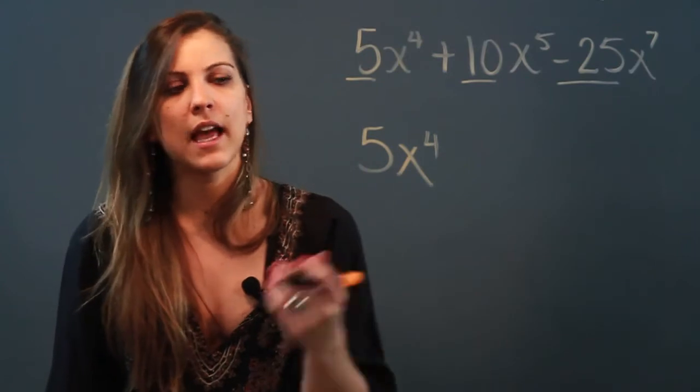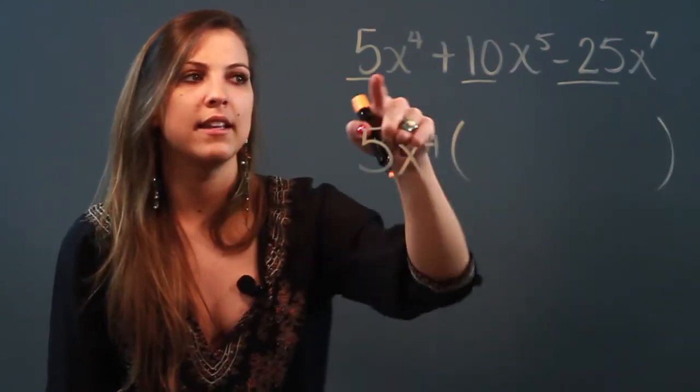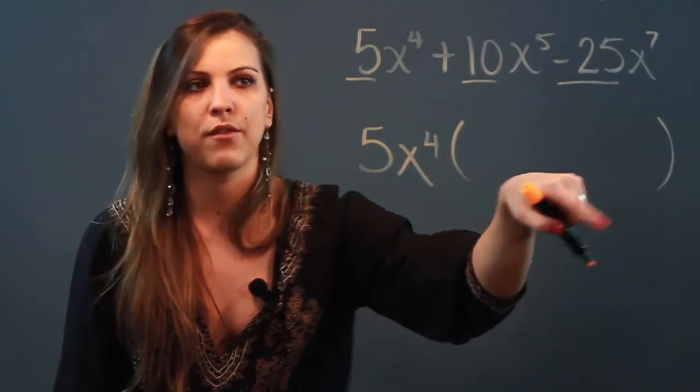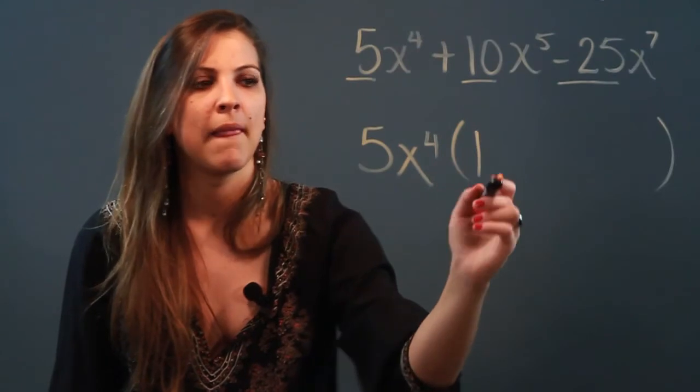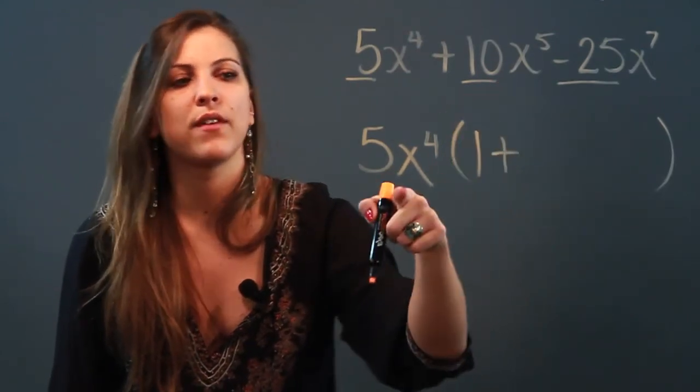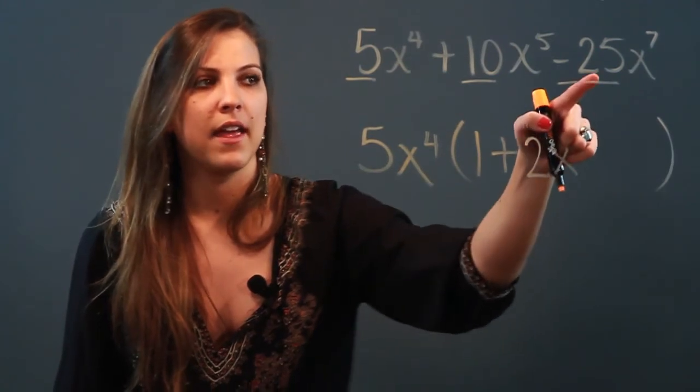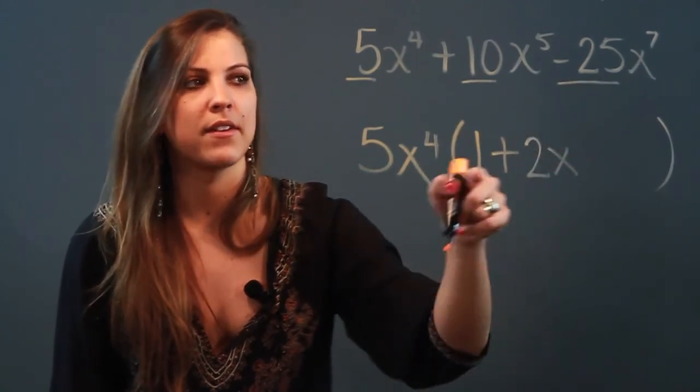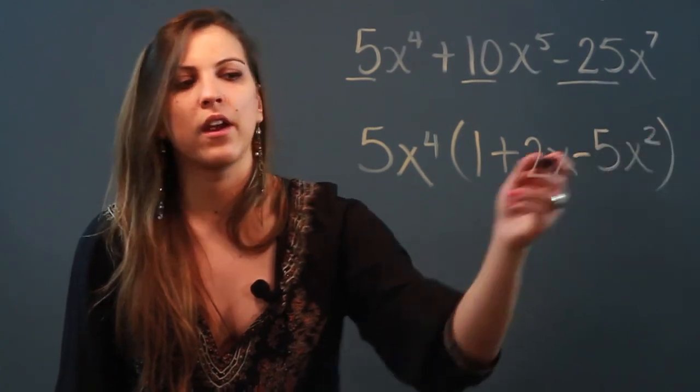Once I have my GCF, I'm going to open up a parentheses and divide the polynomial by my GCF to get my second factor. So 5x to the fourth divided by 5x to the fourth is just 1, plus 10x to the fifth divided by 5x to the fourth is 2x, and then 25x to the seventh divided by 5x to the fourth is going to be minus 5x squared. Now I've factored my polynomial.